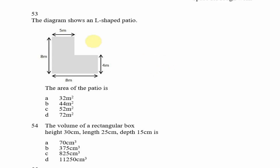Now we're looking at question 53 — the diagram shows an L-shaped patio and they want us to calculate the area. We don't have a direct formula for this shape, but we can cut it into two rectangles. We'll call this rectangle one and this rectangle two, and find their areas separately.